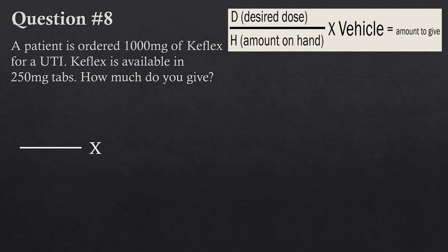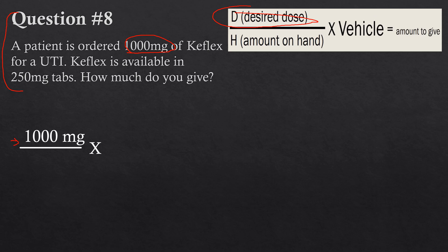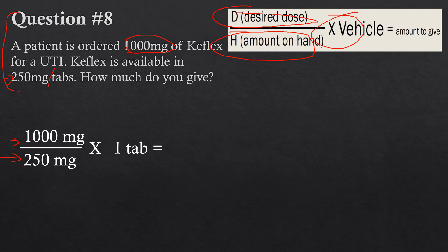Question eight: a patient has been ordered 1,000 milligrams of Keflex for a UTI. Keflex is available in 250 milligram tabs — how much do you give? This one's a little easier — pause and try it. The desired dose is 1,000 milligrams on top. Keflex is available in 250 milligram tabs, so 250 milligrams goes on the bottom. The vehicle is one tab — every tab gives 250 milligrams. Solving: 1,000 divided by 250 gives 4, multiplied by one tab — therefore you give four tablets.